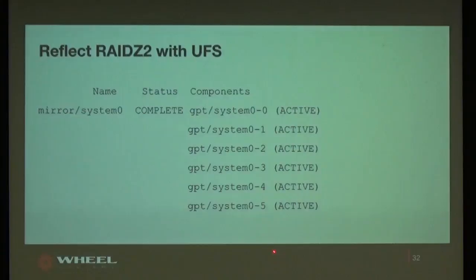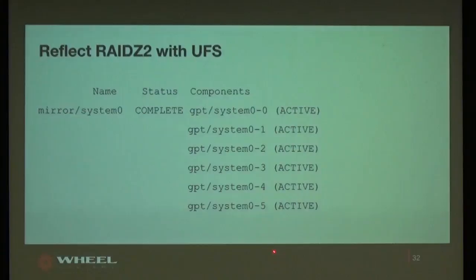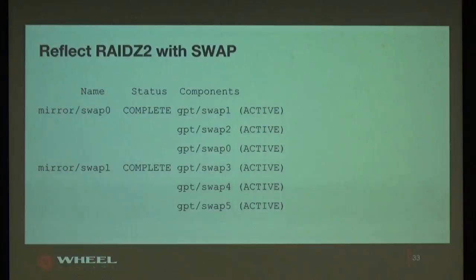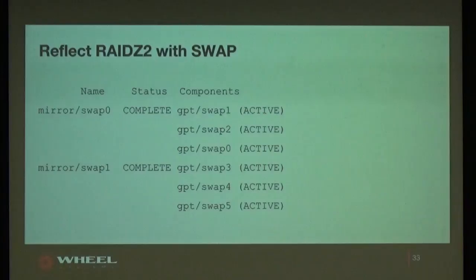For the swap partition it's more complicated — if we put all disks into one mirror we would lose a lot of space. For example, if we have 12 disks each with a 4 GB swap partition and put them all in one mirror, we get only 4 GB total. So we grouped them into sets of three, so if any two disks fail we can still work.